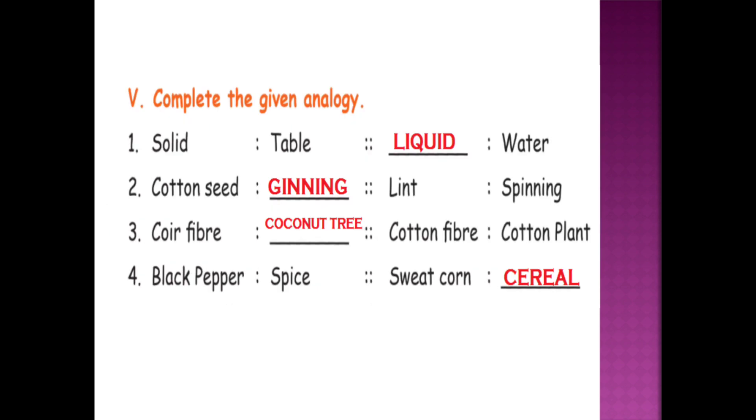Complete the given analogies. Fifth subdivision. First one: solid table, blank water. Liquid water. Cotton seed ginning, lint spinning. Third one: coir fiber blank. Cotton fiber cotton plant, coir fiber coconut tree. Black pepper spice, sweet corn blank. Sweet corn cereal.